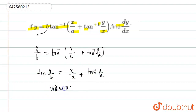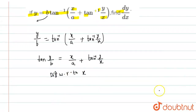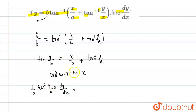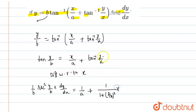Now differentiate with respect to x. The differentiation of tan(y/b) gives sec²(y/b), and the differentiation of y/b is (1/b)·dy/dx. This equals 1/a plus the differentiation of tan⁻¹(y/x), which is 1/(1 + (y/x)²), multiplied by the differentiation of y/x, which gives (x·dy/dx − y)/x².